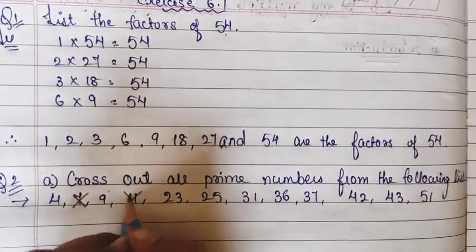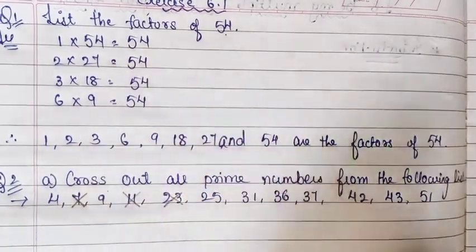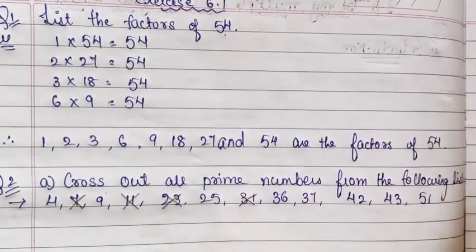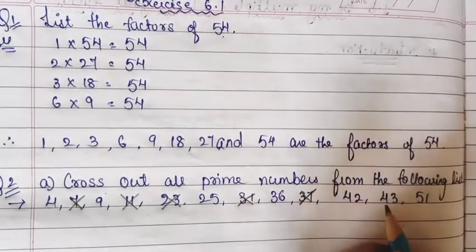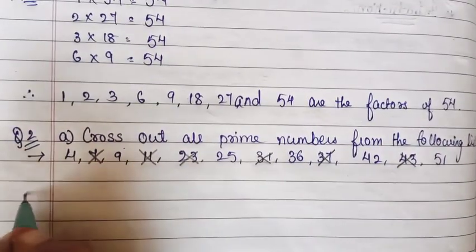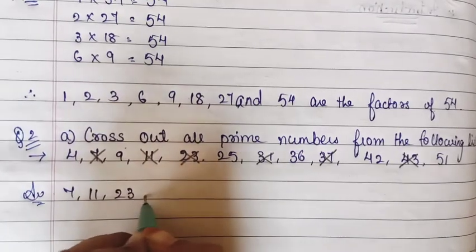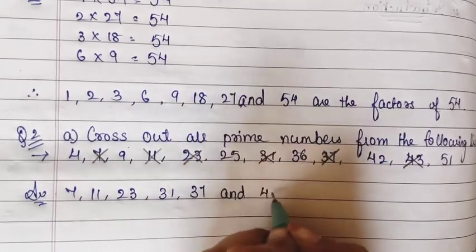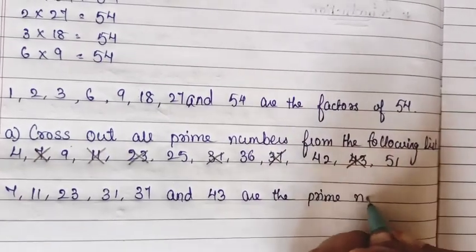7 is a prime number. 11 is a prime number. 23 is not coming in any table, so 23 is a prime number. 31 is a prime number. 36 comes in a table, so it is not prime. 37 is a prime number. 43 is a prime number. So 7, 11, 23, 31, 37, and 43 are the prime numbers.